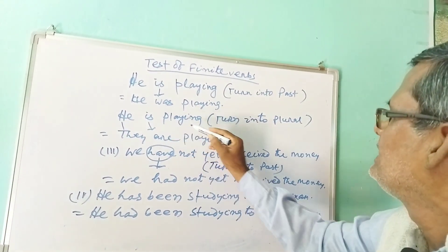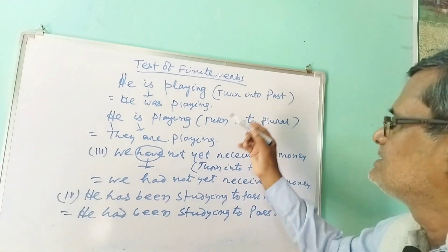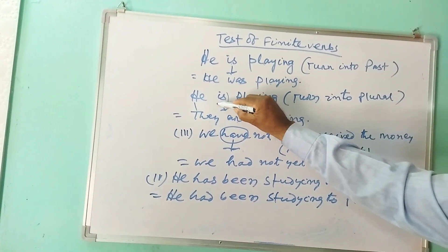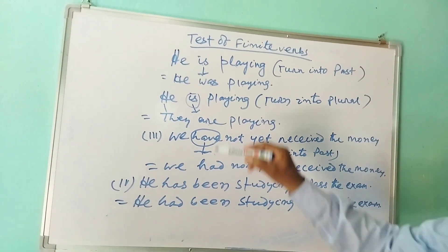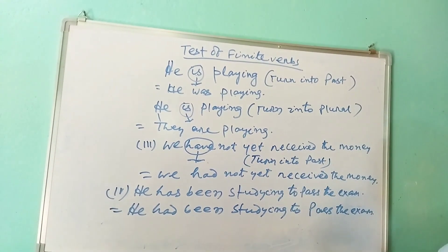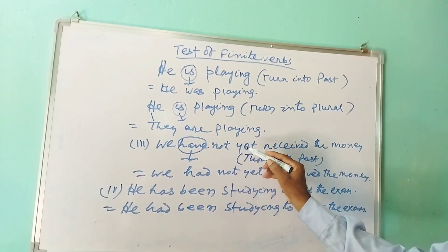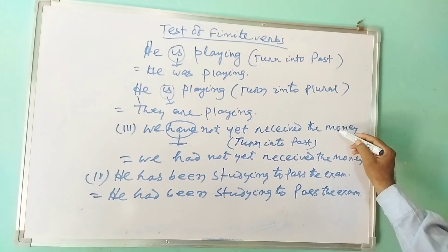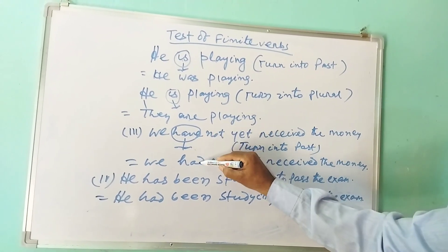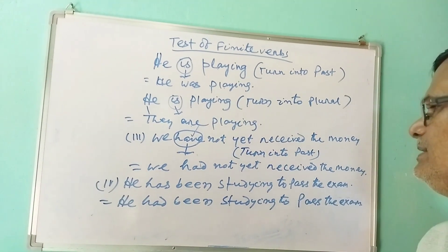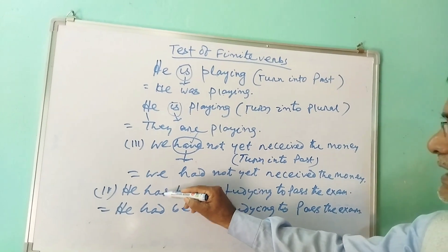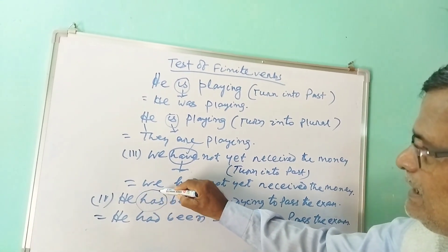That is why a finite verb is also called a tensed verb. Another test is the plural number test: 'He is playing' — 'he' becomes 'they,' and 'is' becomes 'are playing,' so 'is' is your finite verb. From the chapter activity 1, the third sentence 'We have not yet received the money' turns into past as 'We had not yet received the money,' so 'have' becomes 'had' — 'have' is your finite verb. In the fourth sentence 'He has been studying to pass the exam,' 'has' becomes 'had,' so 'has' is the finite verb.